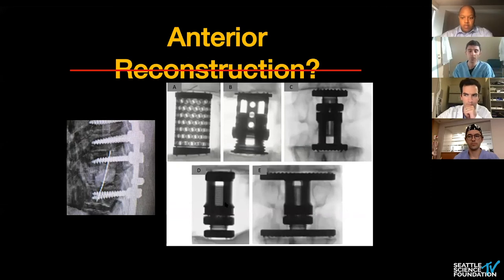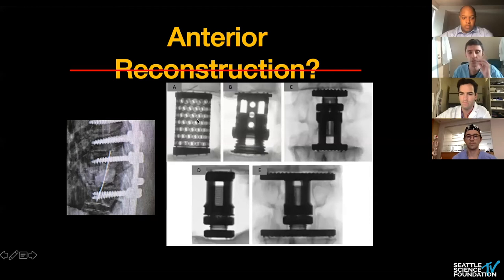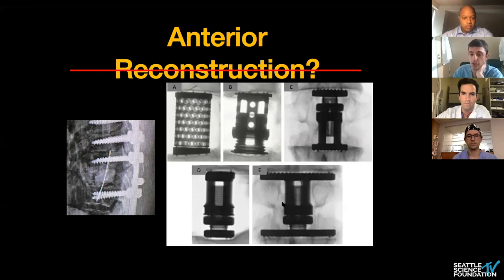When planning these operations, you also need to consider your anterior reconstructive options. An older technique uses cement with rebar, but more commonly nowadays PEEK or titanium cages are used — either static cages or various designs with cylindrical or rectangular base plates. Rectangular end-plate cages have been reported to have less subsidence because they engage the apophyseal ring, but they are challenging to place, especially from a posterior approach in the thoracic spine.